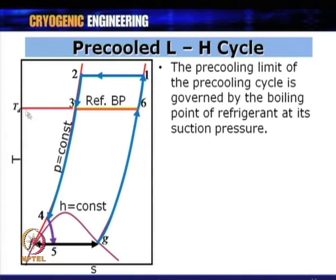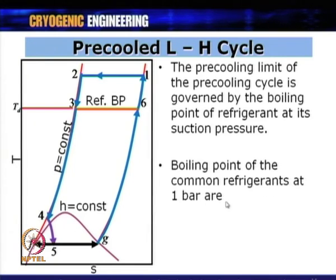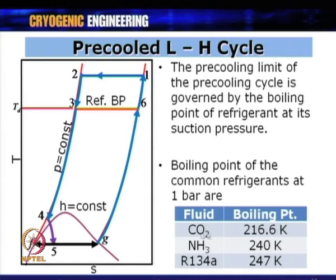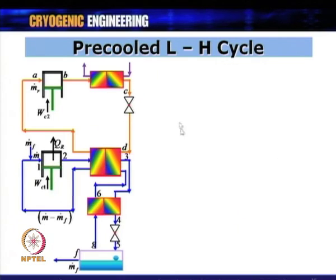The temperature Td at which the gas enters the heat exchanger equals the boiling point of the refrigerant at the suction pressure of the pre-cooling compressor. If the suction pressure is around 1 bar, these are the lowest temperatures achievable in the pre-cooling circuit. With these conditions, the gas enters the heat exchanger at this lowest temperature.